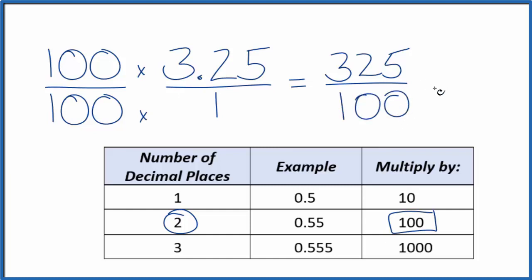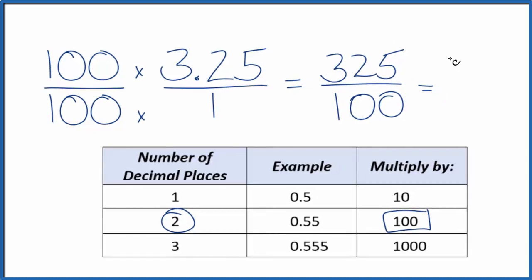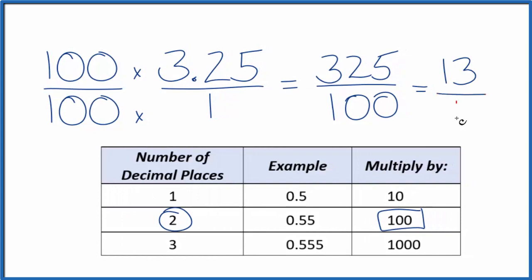We can simplify this. 25 goes into 325 thirteen times, goes into 100 four times. So we have this fraction, it's an improper fraction, 13 fourths.